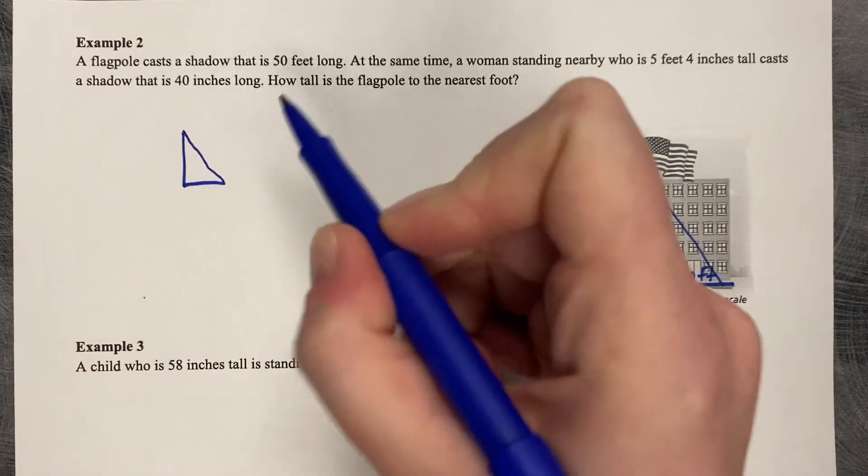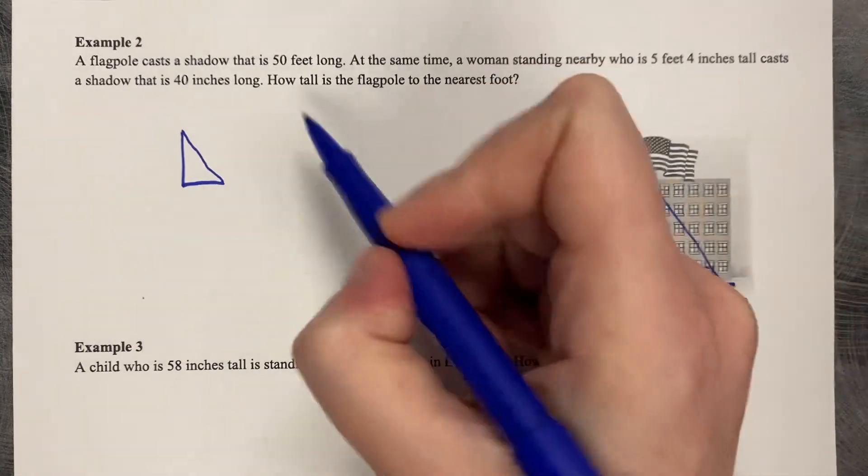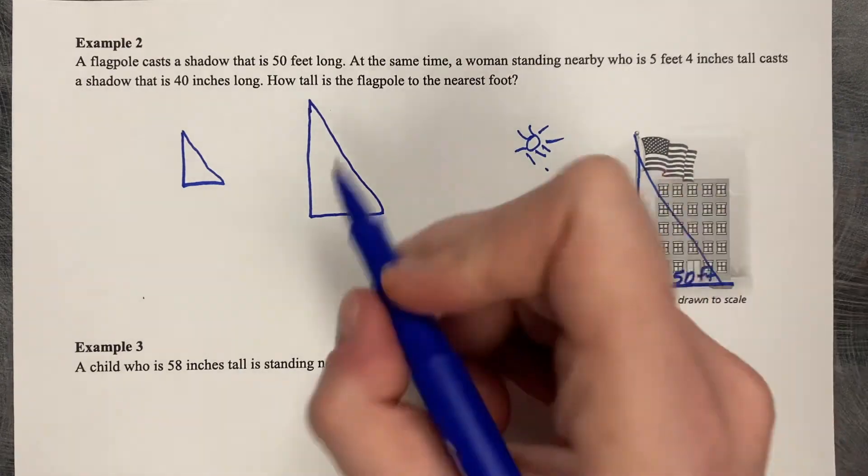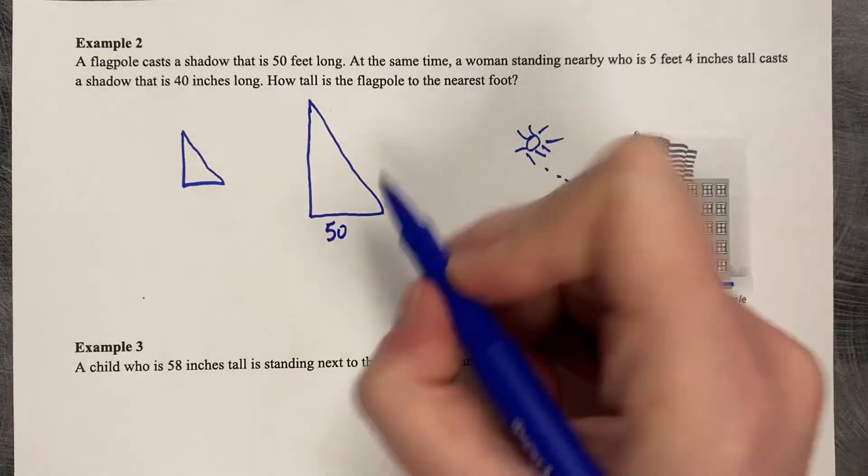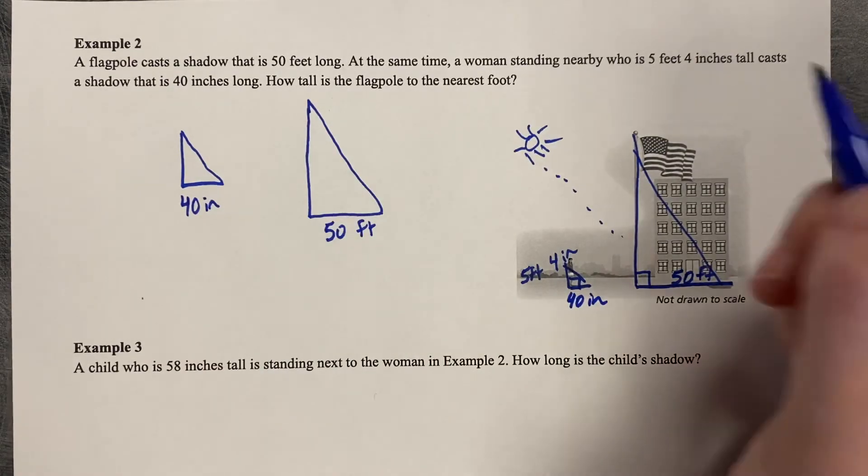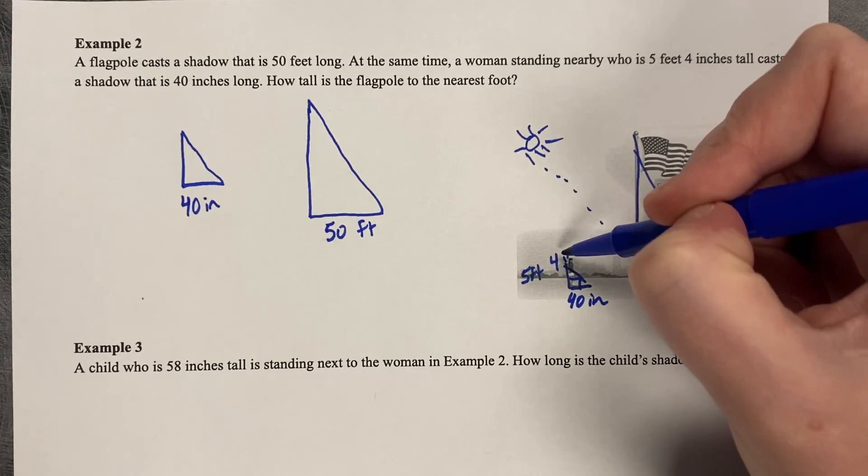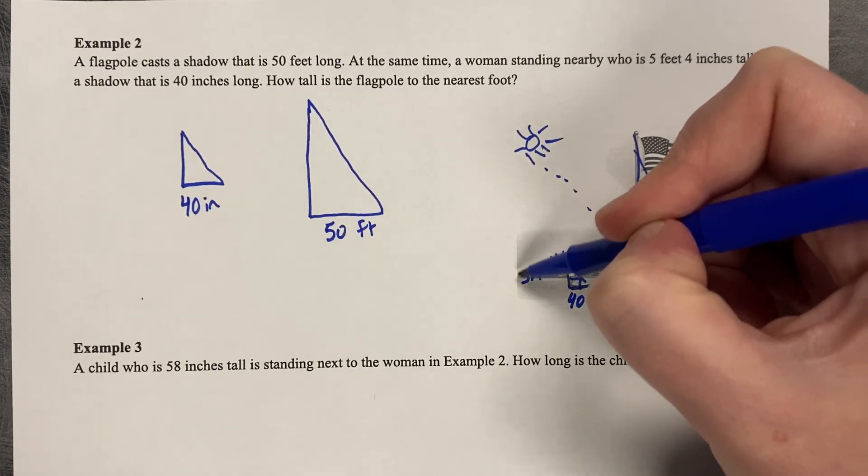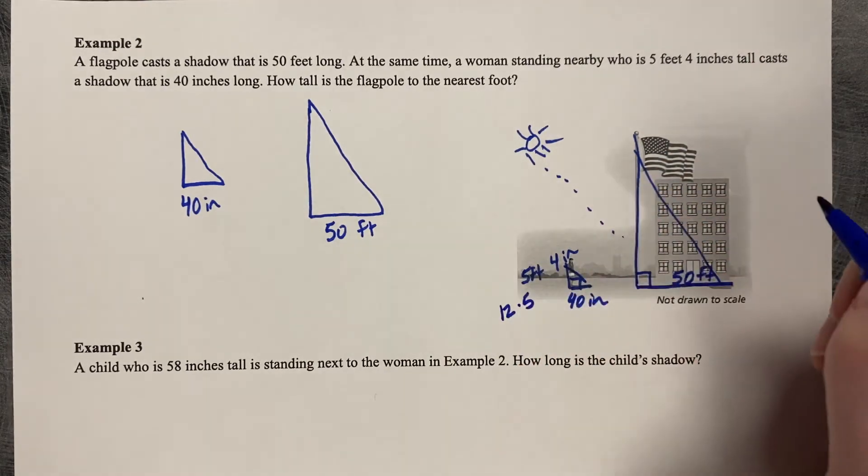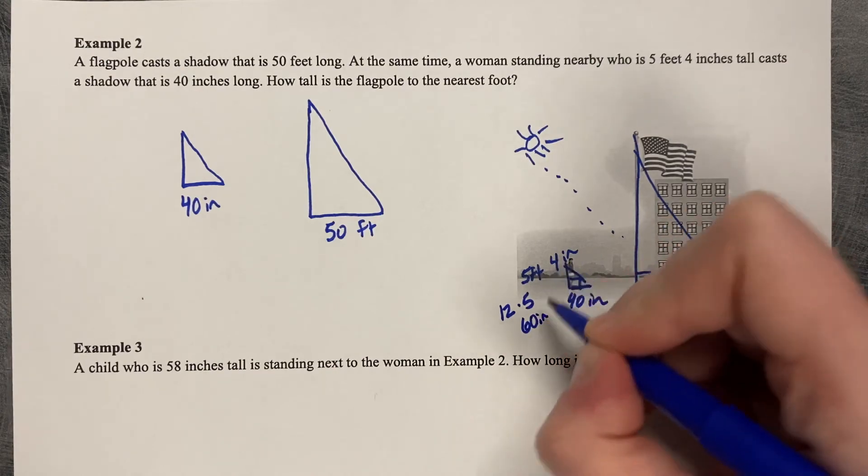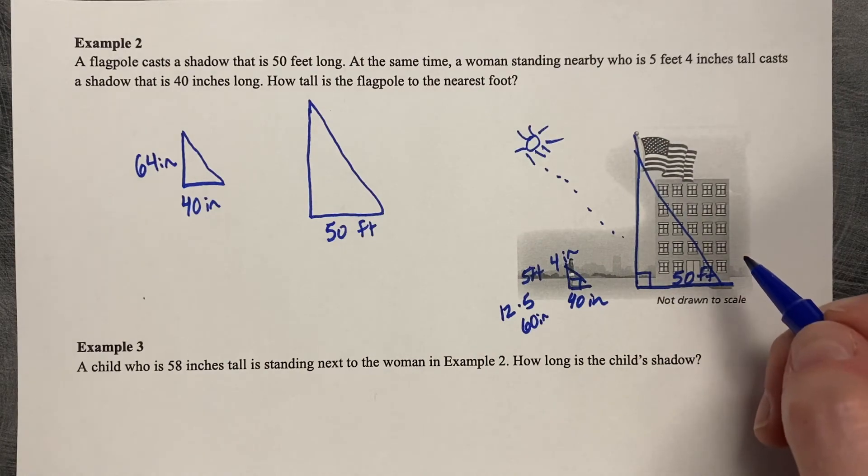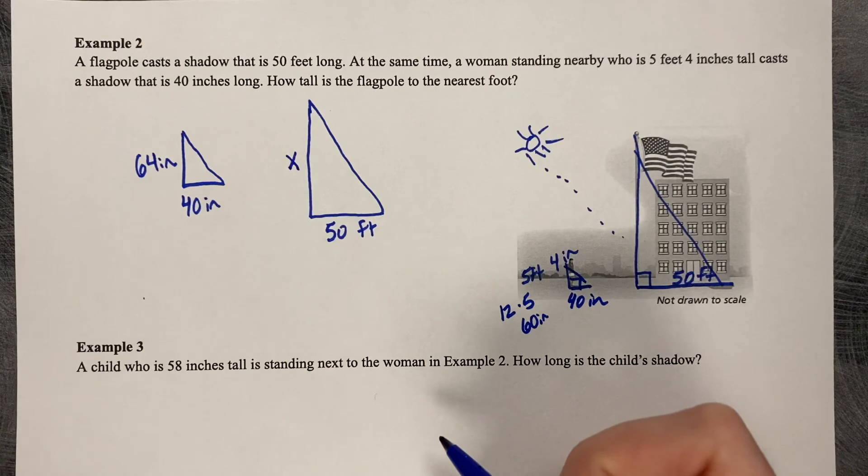So here's our two triangles. We've got this triangle, the smaller one. See, I connected it up for the lady. And then we've got our larger one for our flagpole. And now let's label the parts we know again. So this is 50 feet. This is 40 inches. This is 5 feet 4 inches. Let's fix that and make it all inches. So 5 feet is going to be 12 feet 5 times. So 12 times 5 to get us 60 inches. And then 60 and 4. So this is going to be 64 inches. And then we want to know how tall the flagpole is. So that's going to be our missing value. That's going to be our X.